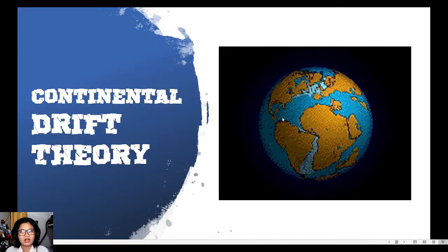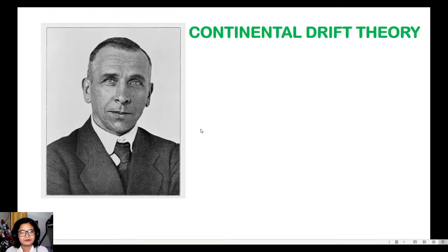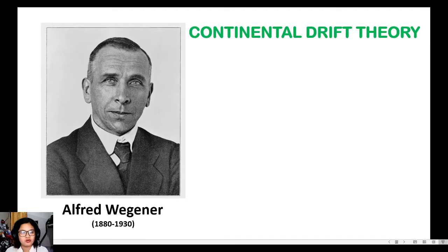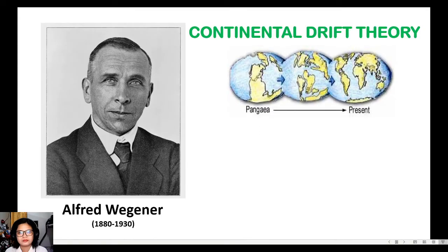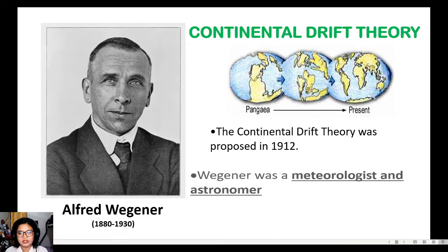Let's start our discussion with the continental drift theory. The continental drift theory was proposed by Alfred Wegener — a German scientist, so his surname is pronounced 'Wegener,' though other pronunciations are fine as long as you know the correct spelling. The continental drift theory was proposed in 1912.